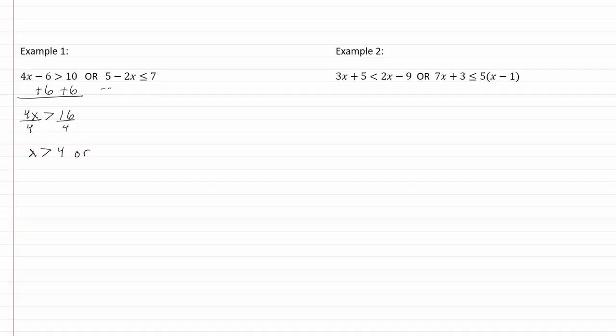Solving the second one, I'll subtract five from both sides. I get negative 2x is less than or equal to two, divide by negative two and x is less than or equal to negative one.